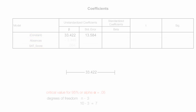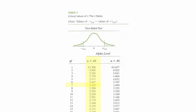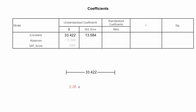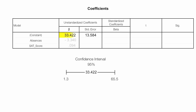If I look up 7 degrees of freedom and an alpha of 0.05 in a standard two-tailed test table, the critical value is 2.365 — I'll use 2.36. So I take 2.36 times the standard error, which equals 32.05. Then 33.422 minus 32.05 equals 1.3, and 33.422 plus 32.05 equals 65.5. So I'm 95% confident that beta is between 1.3 and 65.5 — that's a large range.